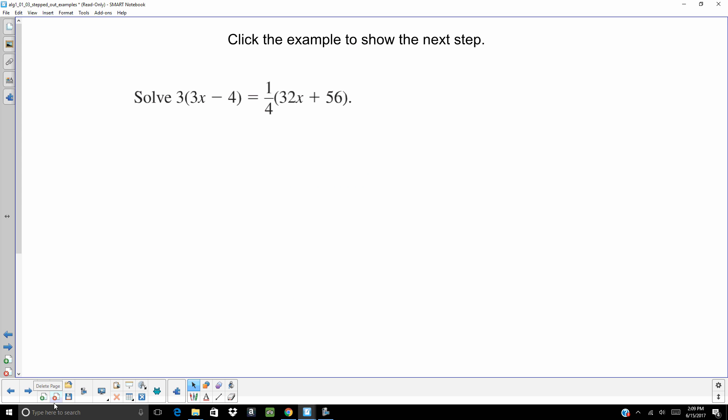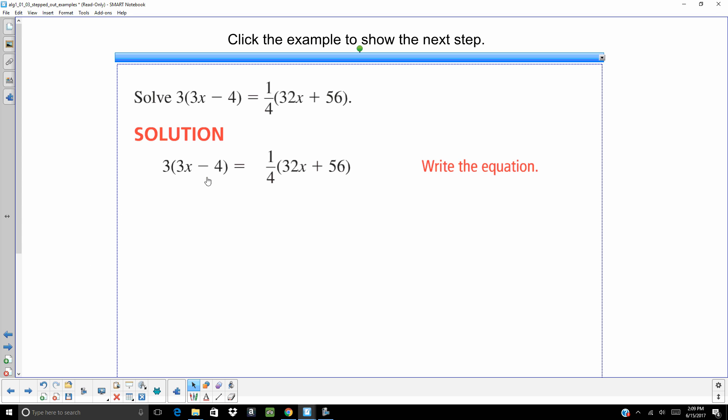Let's do one that's got the distributive property. What I like about this one is it's got the distributive property. So you're going to take that 3 and you're going to multiply it by the 3x and the 4. Same thing with that 1 fourth. Multiply it by the 32 and the 56. When you do that, you're going to get 9x minus 12 equals 8x plus 14.